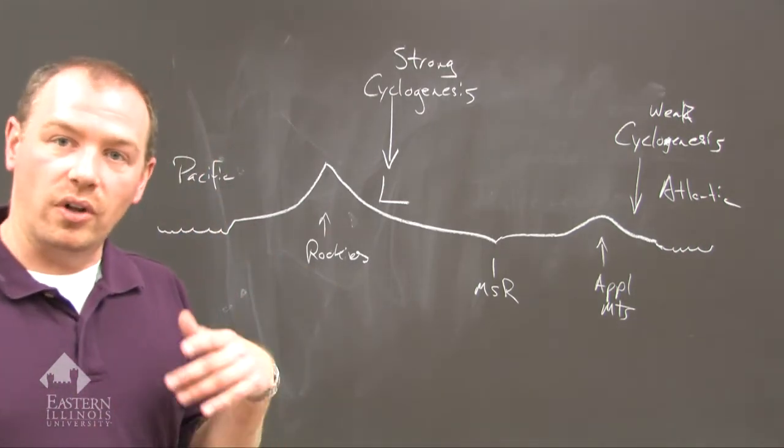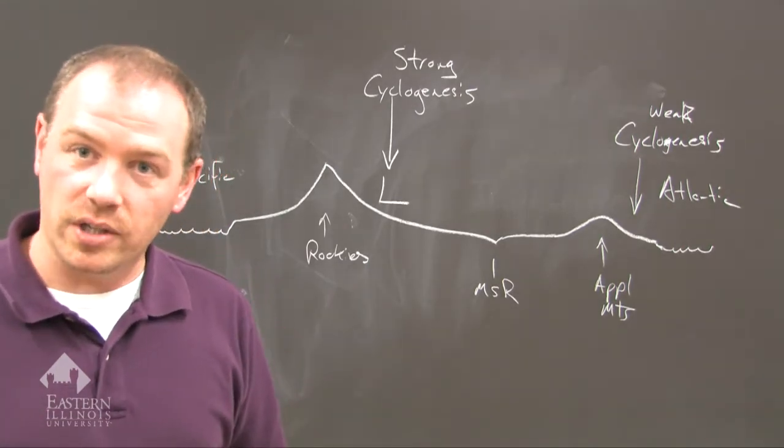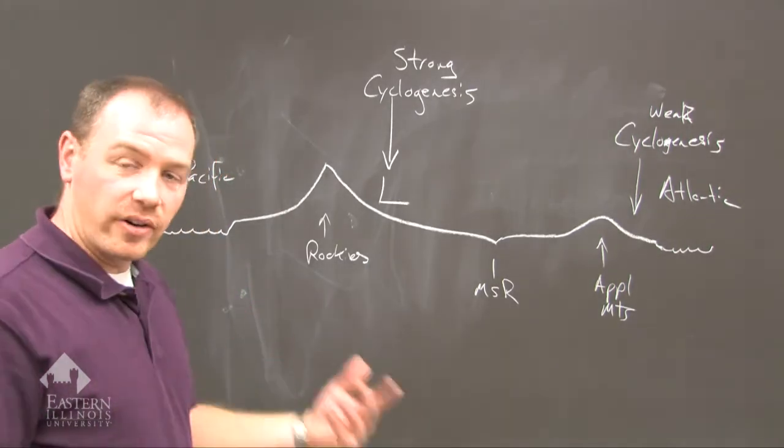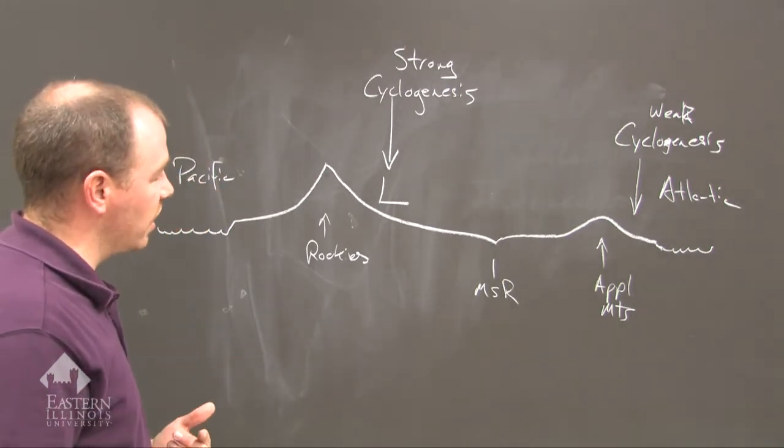And in particular, we call this, not for this particular class, but we call this the Hatteras Low. It develops in the Hatteras region of the eastern coast of the United States.